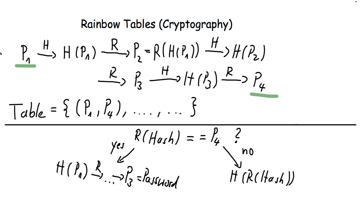And then uses the reduction function on it again and checks if it's p4 and repeats this whole process.